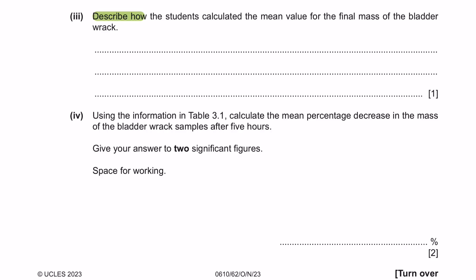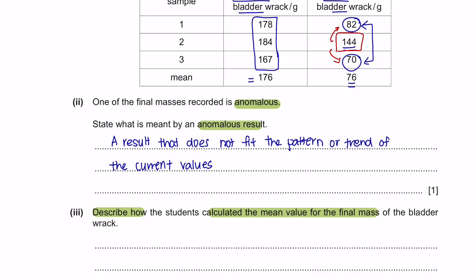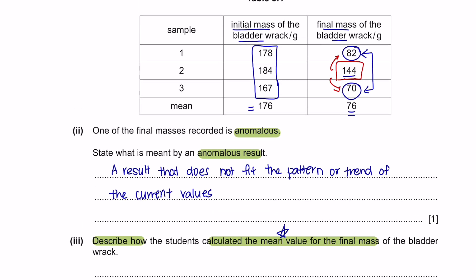Part 3. Describe how the students calculated the mean value for the final mass of the bladder rack. So if you've taken maths, you should know how to calculate a mean value. A mean value will be obtained by adding the sum of all the samples and then dividing it by 3. Since there is an anomalous result here, we will not be including sample 2. So we will only take sample 1 and 2, add them together and divide it by 2 instead.